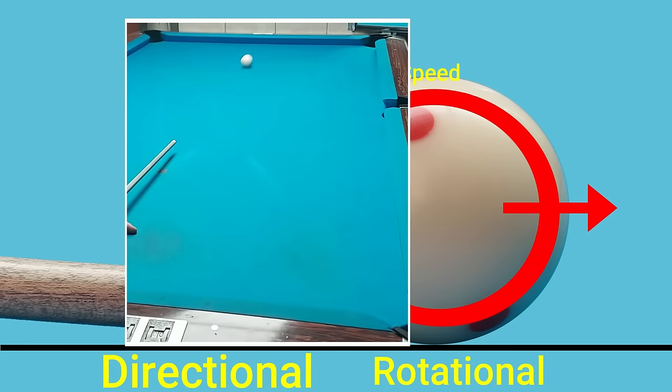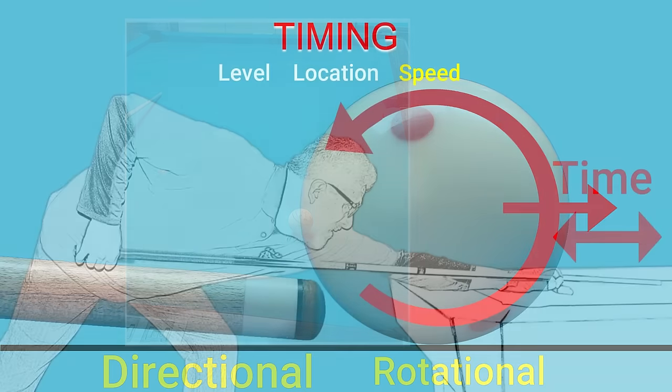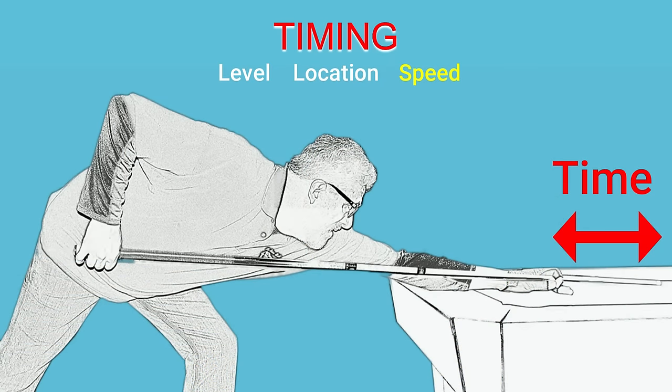So when we use a long bridge to help hit the power draw shot harder, we are not necessarily trying to increase the cue ball's directional energy. No, we're trying to increase the cue ball's rotational energy.